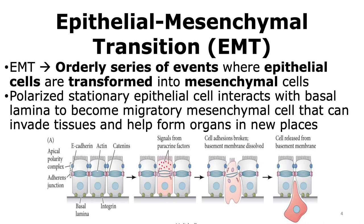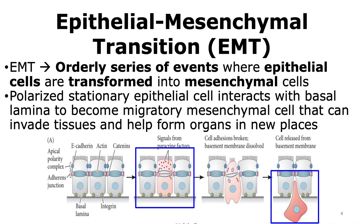In the case of epithelial mesenchymal transition, as shown in the figure below, we have a polarized stationary epithelial cell which interacts with the basal lamina. Through the process of epithelial mesenchymal transition, it forms a migratory mesenchymal cell that can now migrate and invade into different places of the developing organism to form organs and other structures.